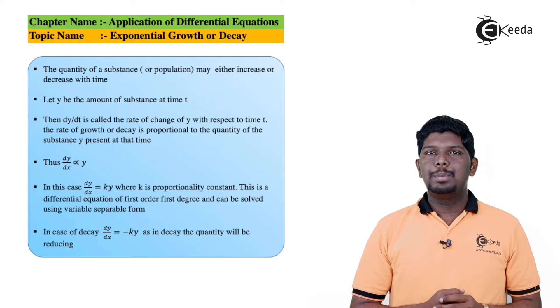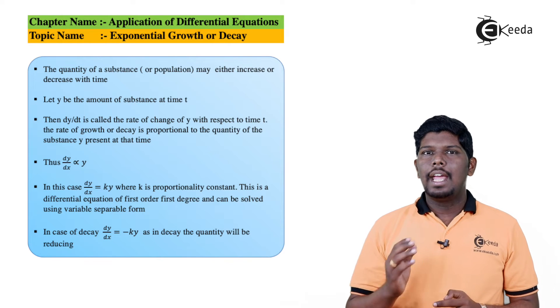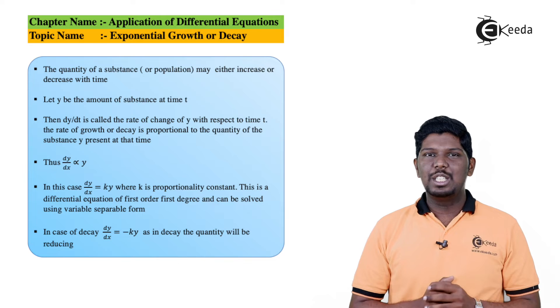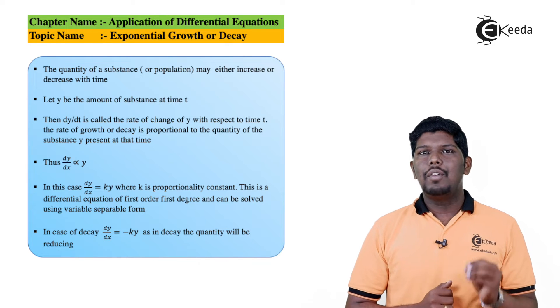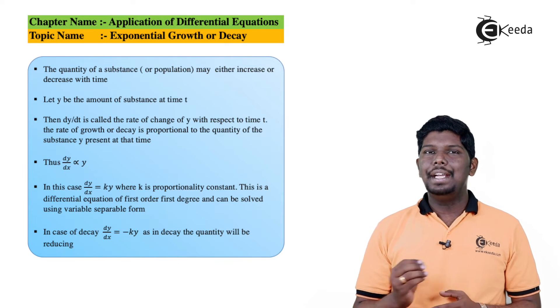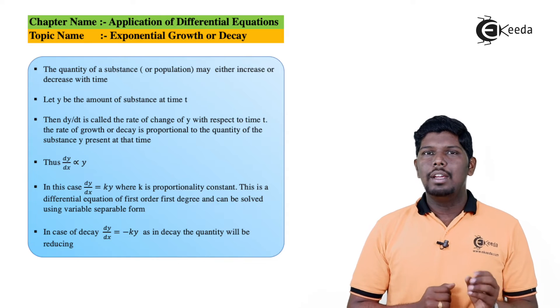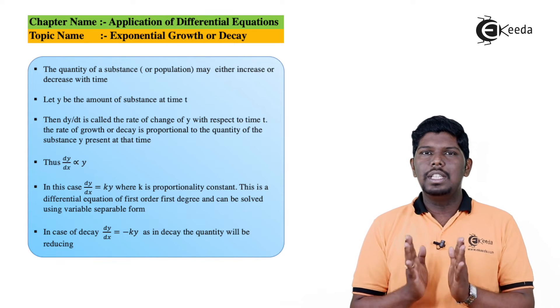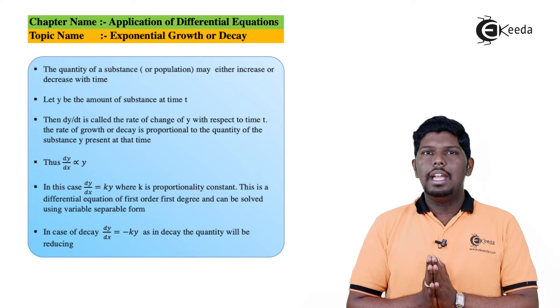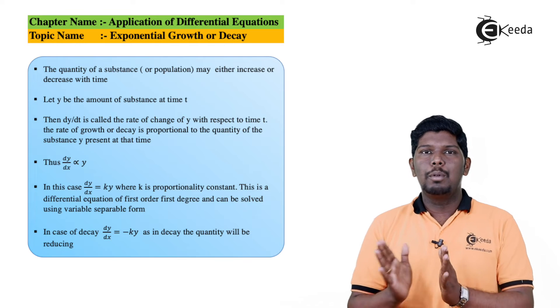The quantity of a substance or population can either increase or decrease. Most of the time it increases only. Now let us assume that y be the amount of a substance at any time t. Now this y we are taking as an amount of substance. This substance can be anything - it may be a population or it may be a number of bacteria.